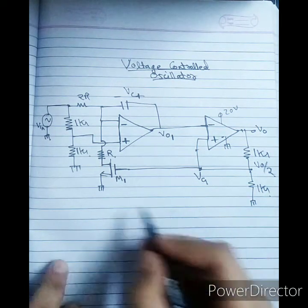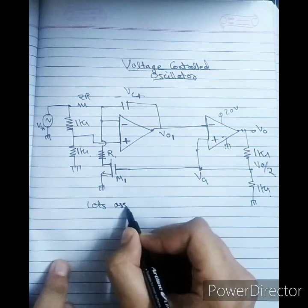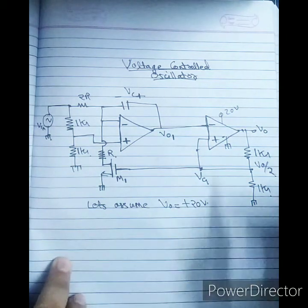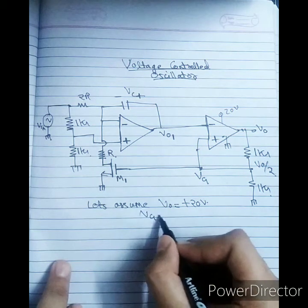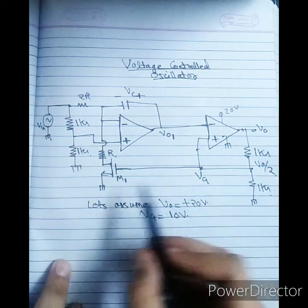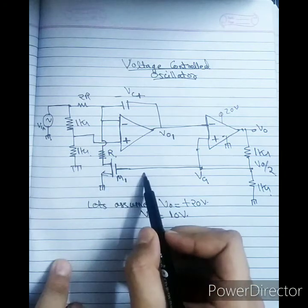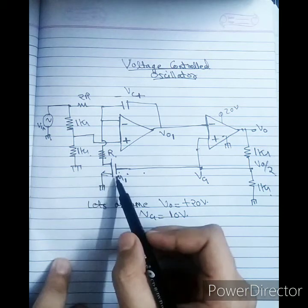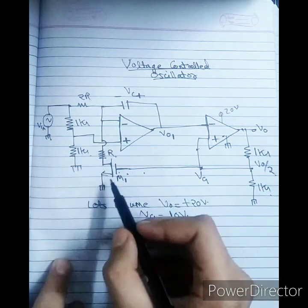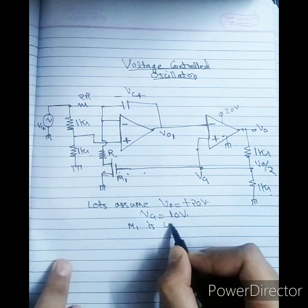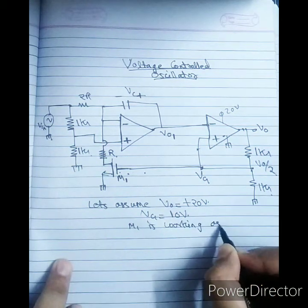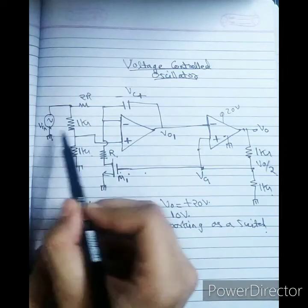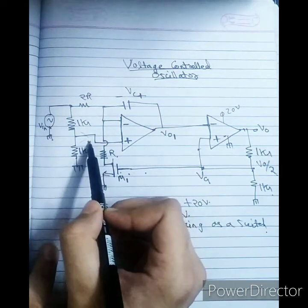Let's assume V0 to be +20V. If V0 is +20V, then VG will become 10V. If VG is 10V, this MOSFET will be ON because 10V is quite high. This means MOSFET M1 is working as a switch — it is turned ON and acting like a closed switch.